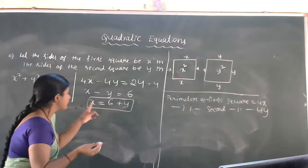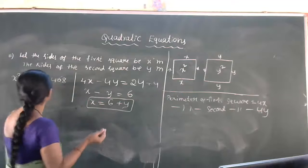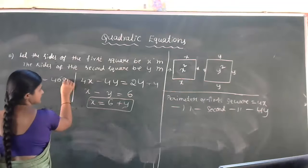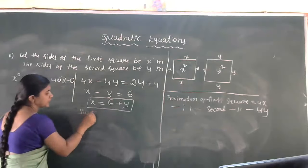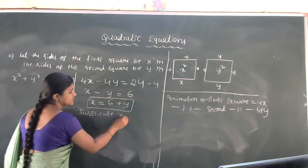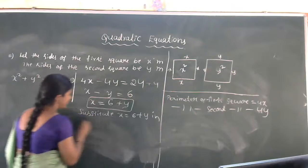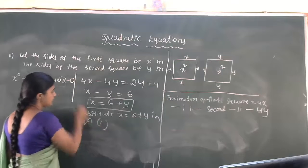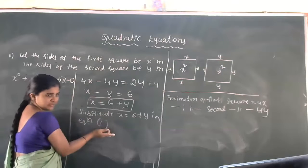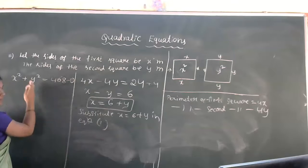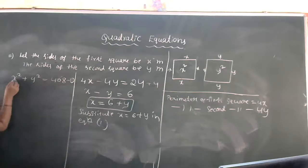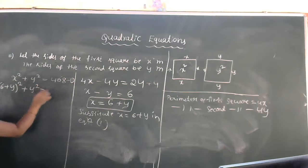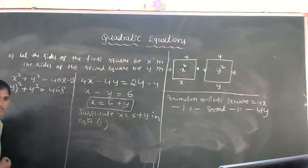Now we substitute x = 6 + y into equation 1, which is x² + y² = 468. Replacing x with (6 + y), we get (6 + y)² + y² = 468.